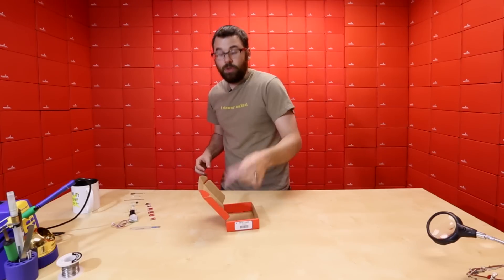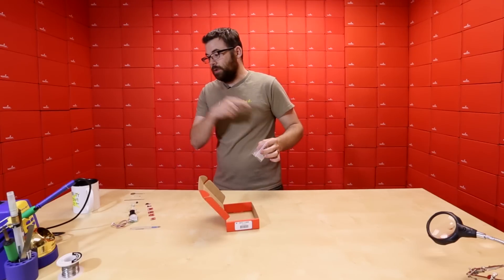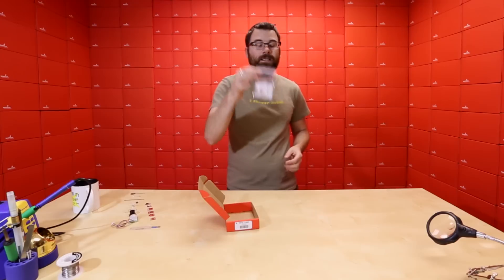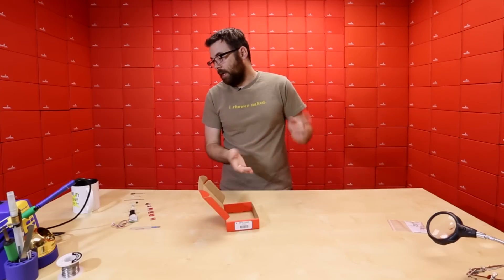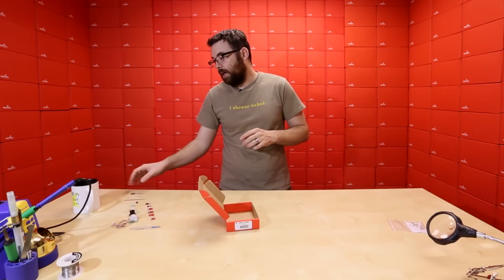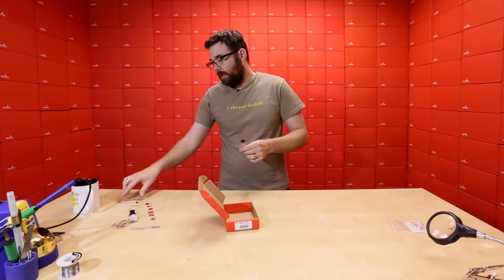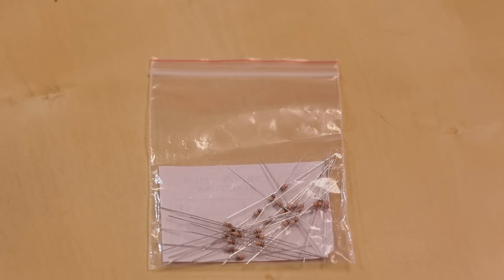And the last thing that's in this kit, which is a new addition to this kit, in addition to the 1 megaohm resistors, is a baggie of 10K resistors. A lot of these sensors, like the reed switch, the photo cell, the flex sensor, and the force-sensitive resistor, need a 10K resistor if you're going to use it with an Arduino or another microcontroller. So we went ahead and included a pack of 25 10K resistors.